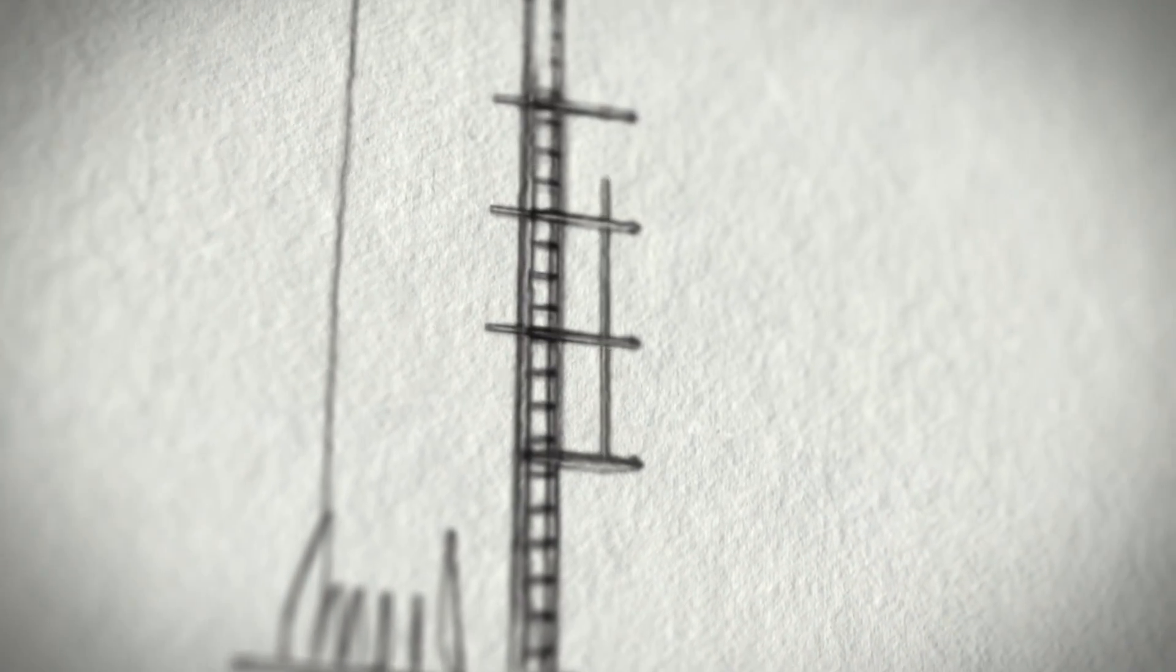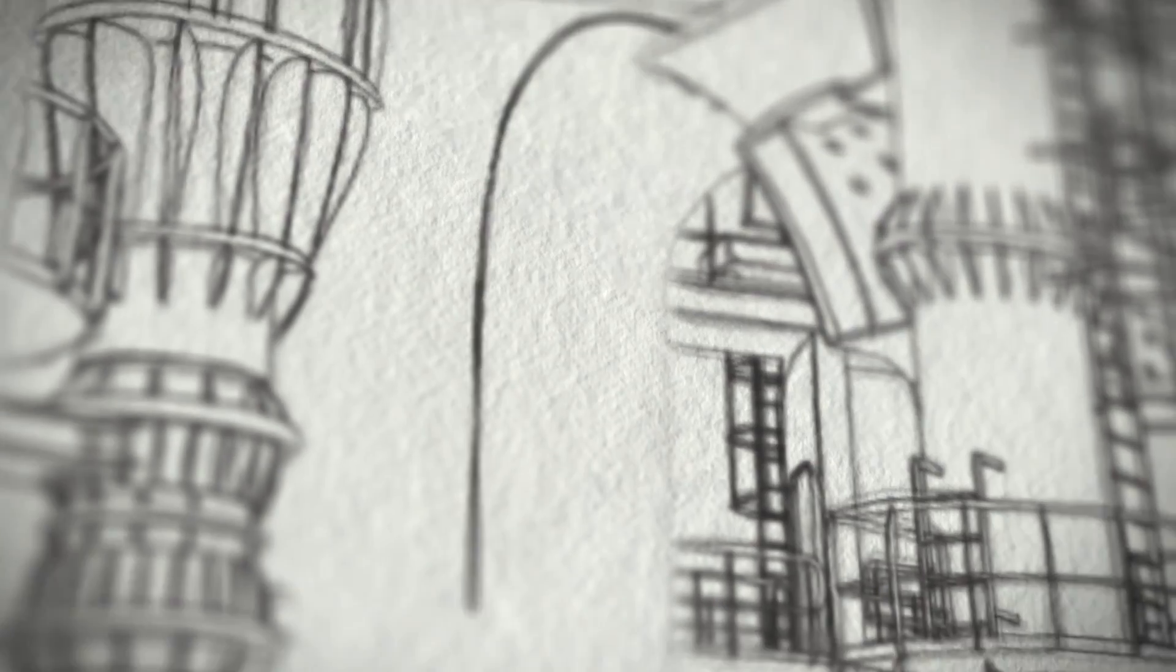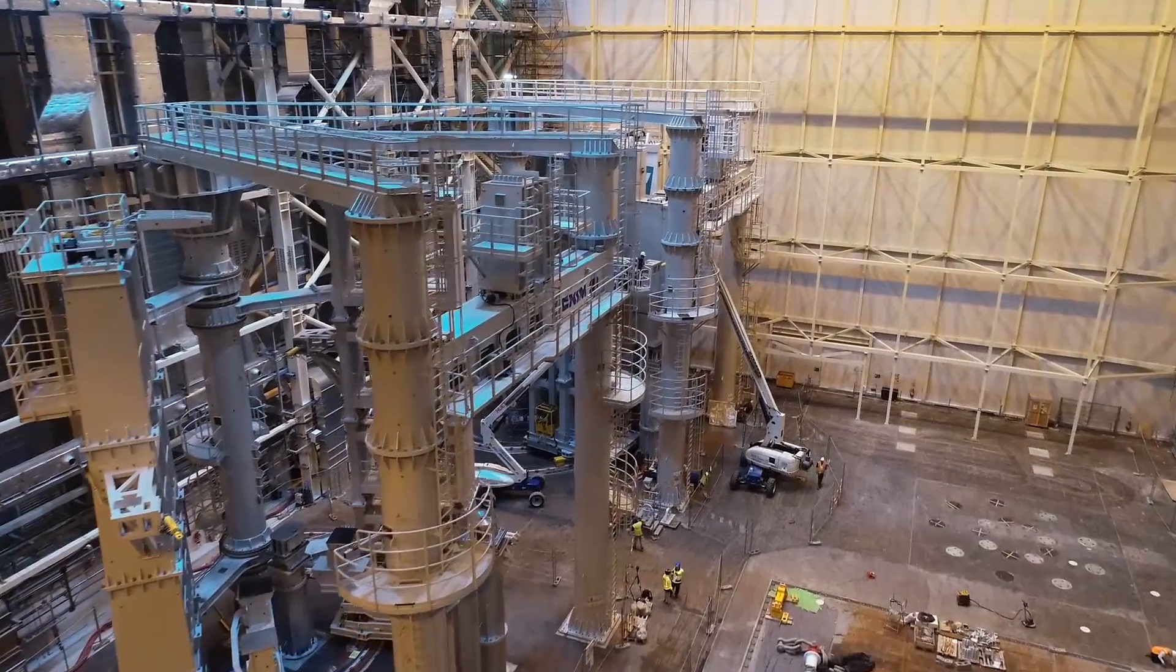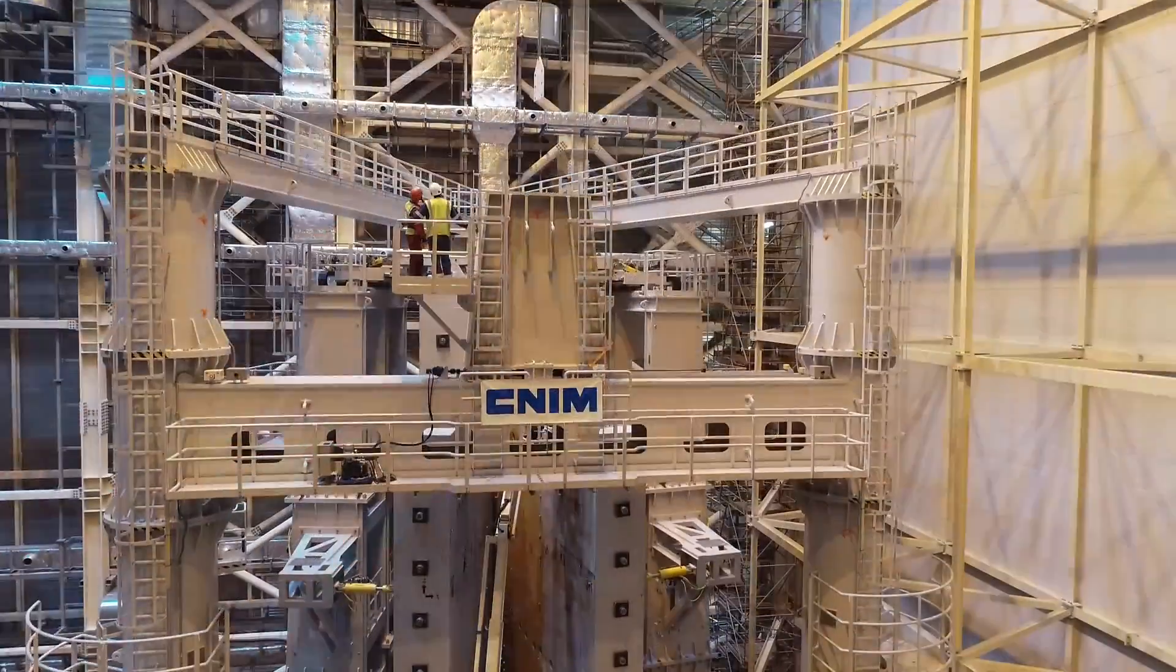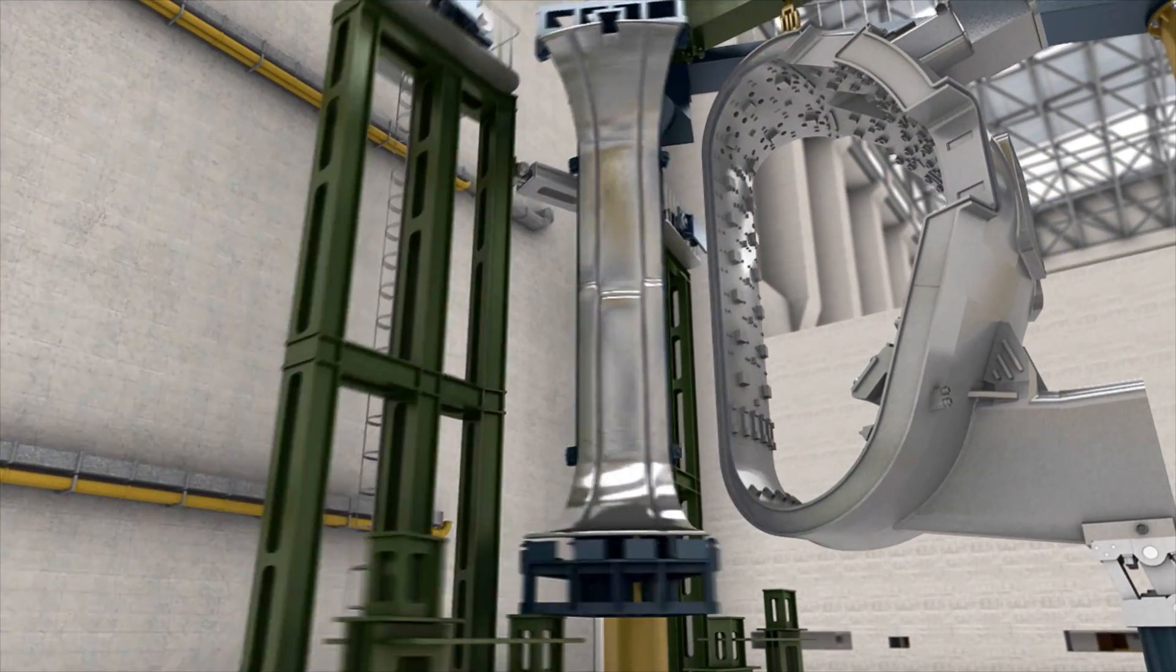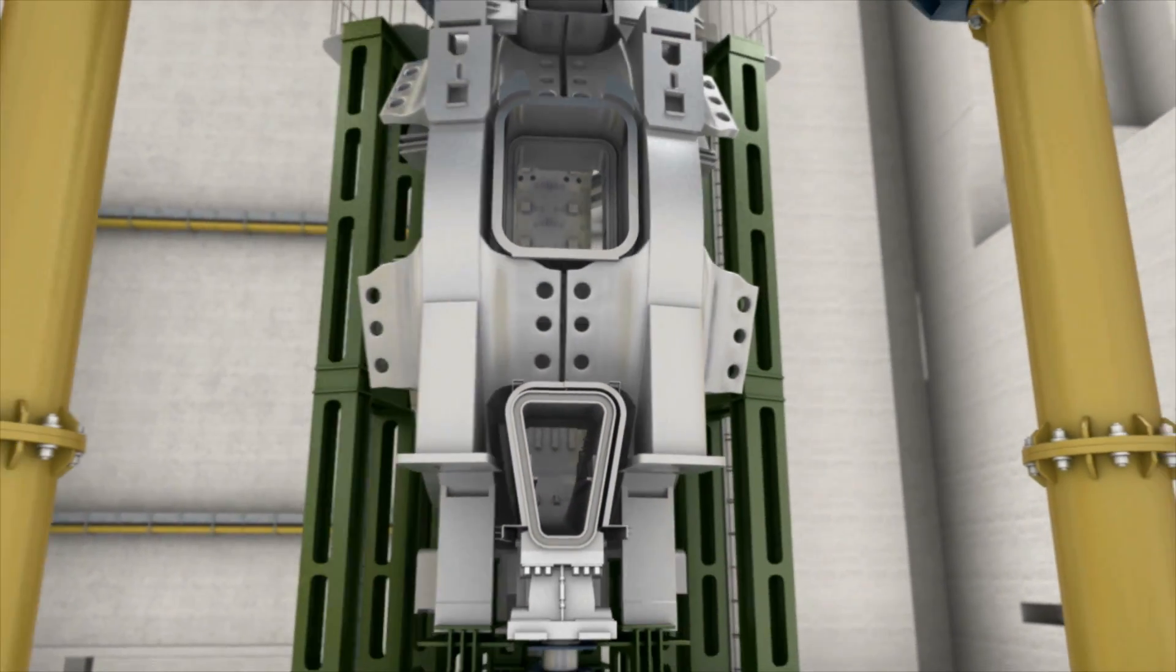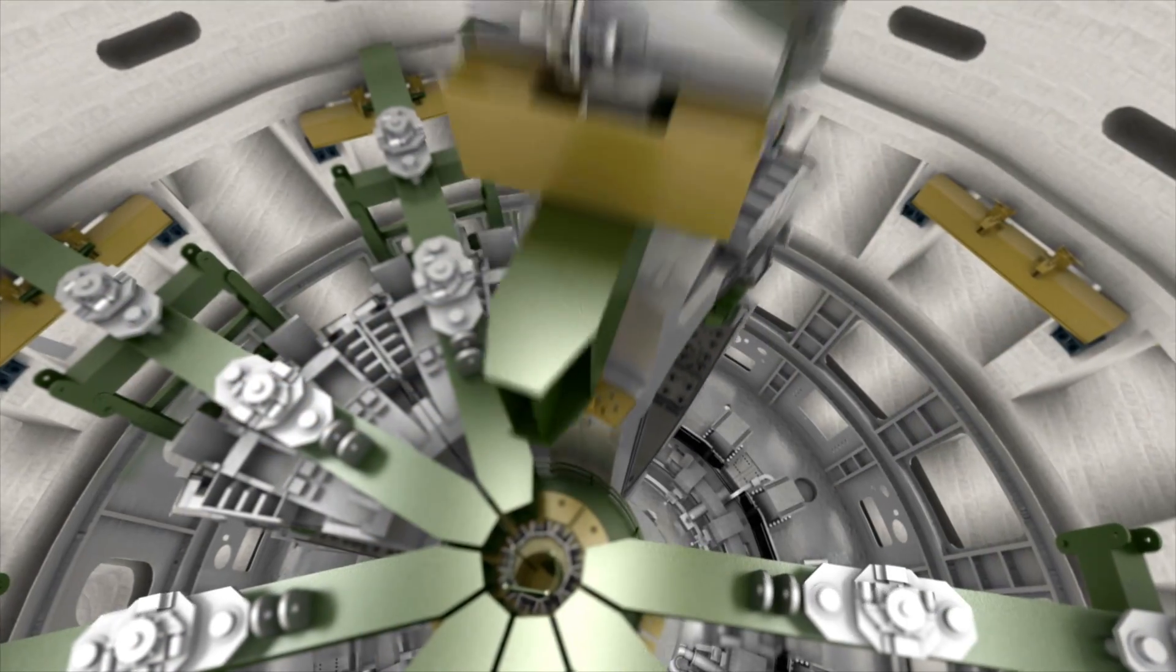While the lower cryostat components are being assembled and welded in the tokamak pit, two giants are standing in wait in the adjacent assembly hall. Standing six storeys high, the purpose-built sub-assembly tools will suspend each of the nine sectors of the vacuum vessel in turn, while thermal shield panels and toroidal field coils are rotated into position. By the end of this year, the first completed sub-assembly will be transferred to the tokamak pit. Eight others will follow.